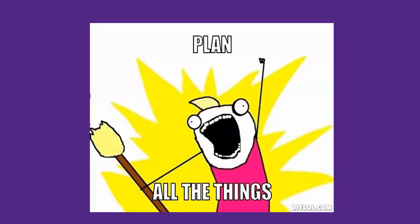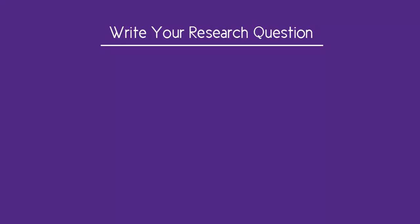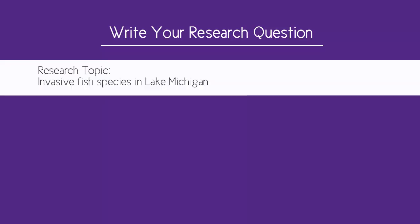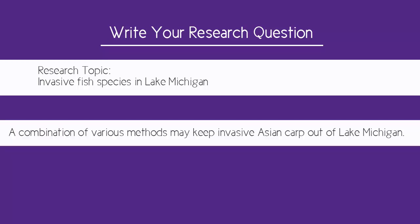Planning out your search will save you time. The first thing you need to do is write your general research topic as a more specific sentence or question. For example, if my broad topic is how to keep invasive fish species out of Lake Michigan, I might first want to narrow my topic to a specific type of invasive fish. So I might state my topic as: a combination of various methods may keep invasive Asian carp out of Lake Michigan.